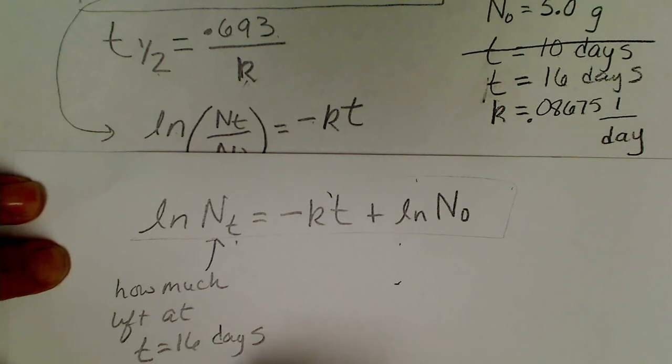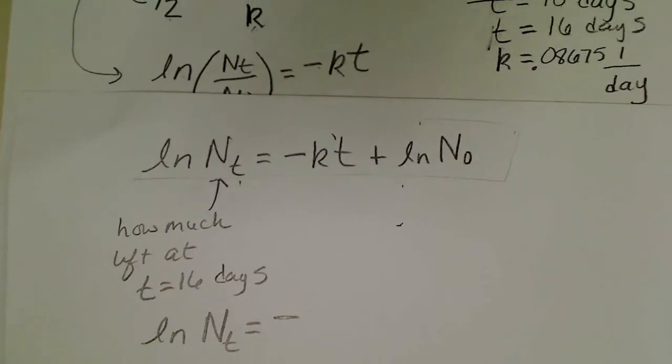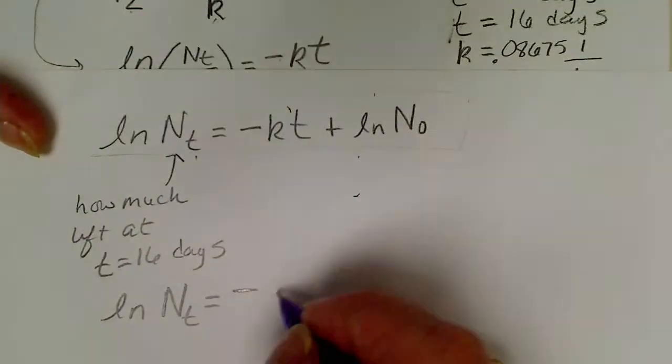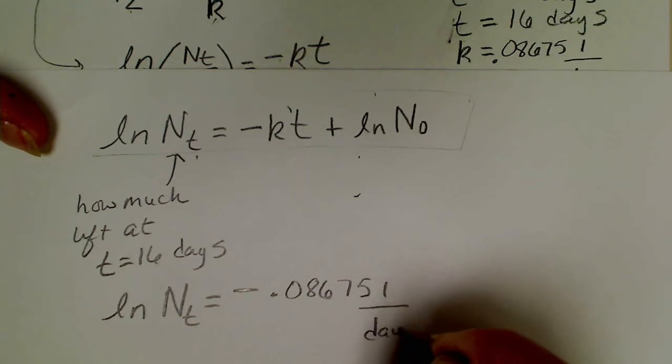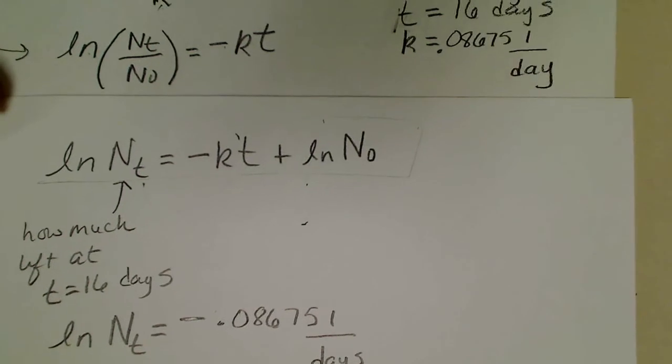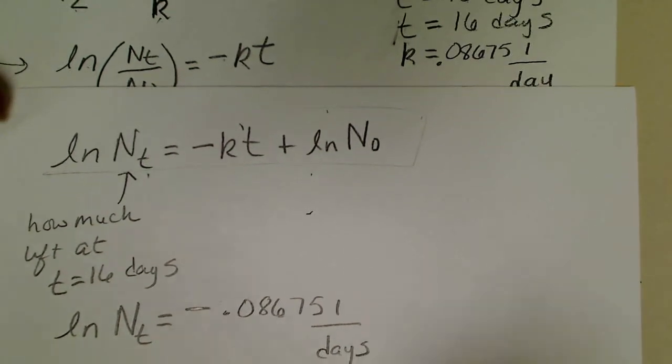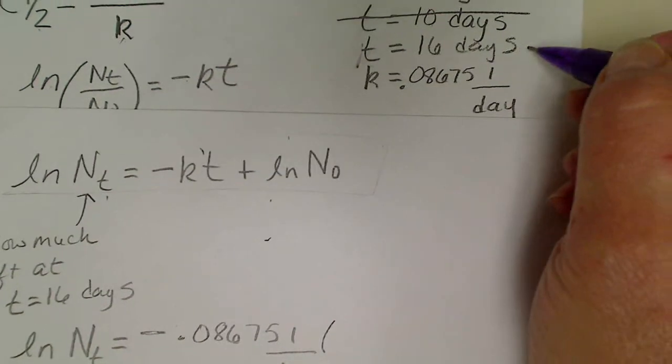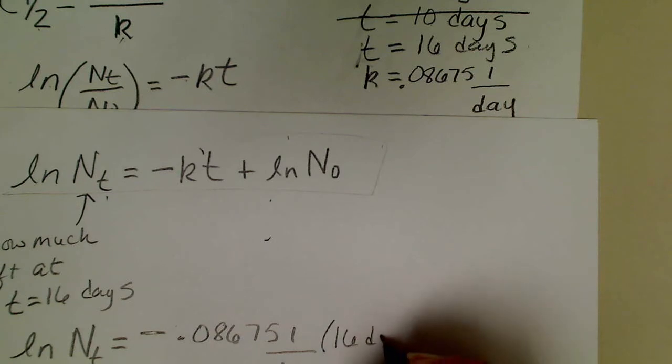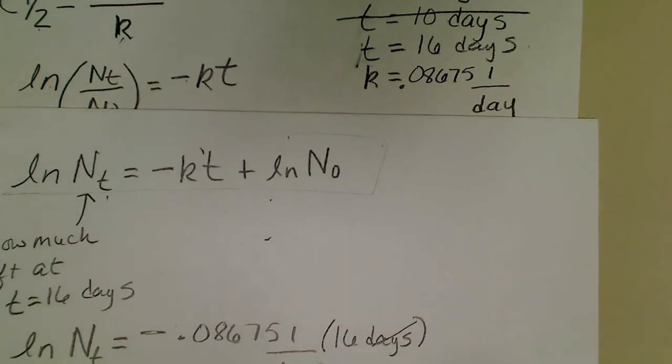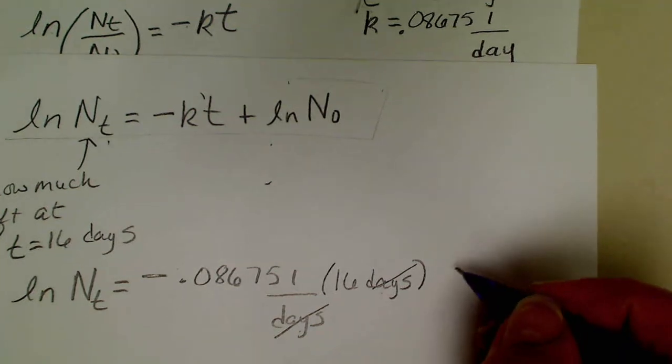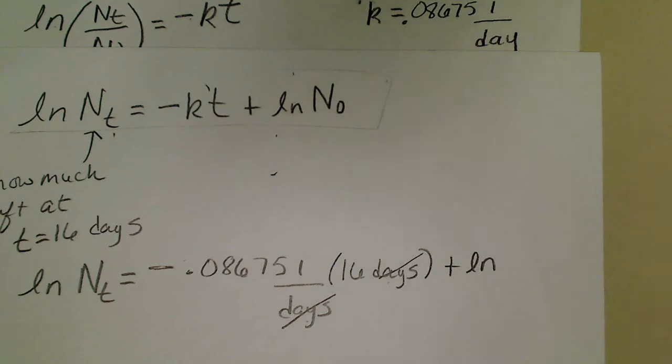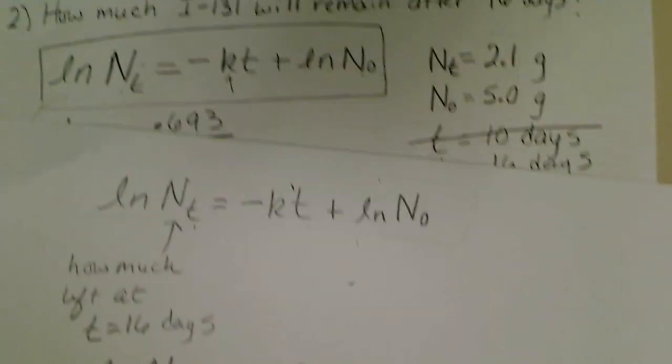I'm going to rewrite ln of our activity at time t equals negative and I'm going to plug the values in. Our k value is 0.08675 reciprocal days because we used days to solve for that, times t. The t in the second half of the problem is 16 days, so we have to be careful that our decay constant has the same units as our time that's given.